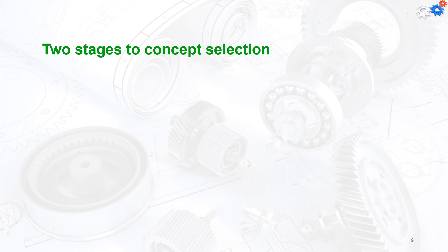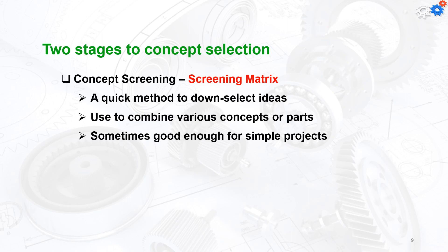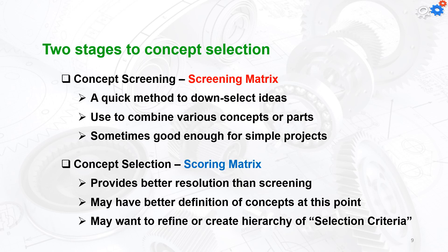The two stages of concept selection are first concept screening, a quick method to down-select ideas and combine various concepts or parts, sometimes good enough for simple projects. The other stage is concept selection by scoring matrix method. After the screening matrix, we can provide better resolution using the scoring matrix and may want to refine or create a hierarchy of selection criteria for our design.